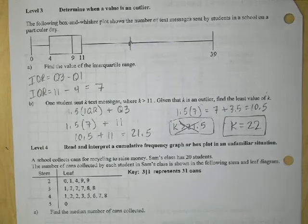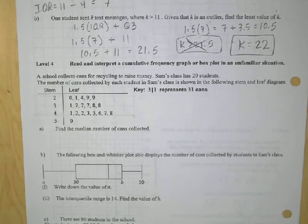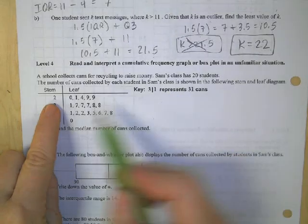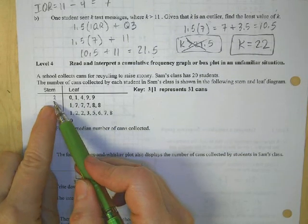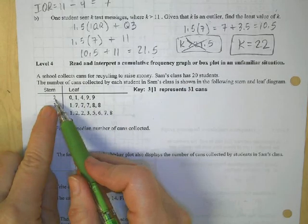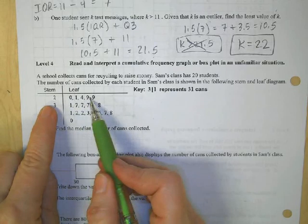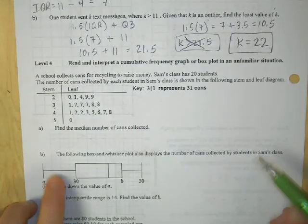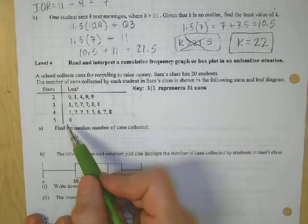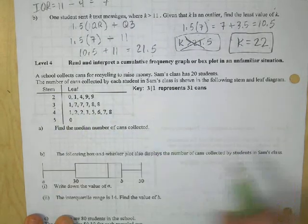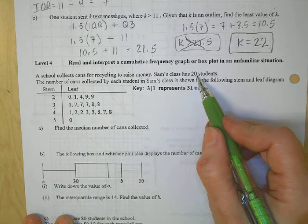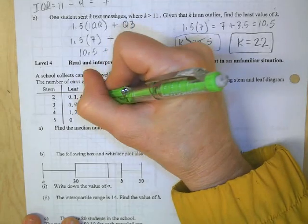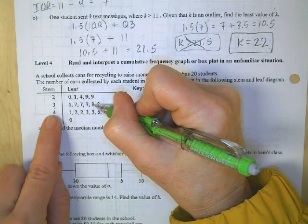Level four combines everything. We have a stem-and-leaf plot: the left digit is tens and the right is ones. Values in Sam's class include 20, 21, 24, 29, 29, 31, 37, 37, 37, 38, 38, and more — up to a maximum of 50, minimum of 20. Find the median. There are 20 students, so the median is between the 10th and 11th values.